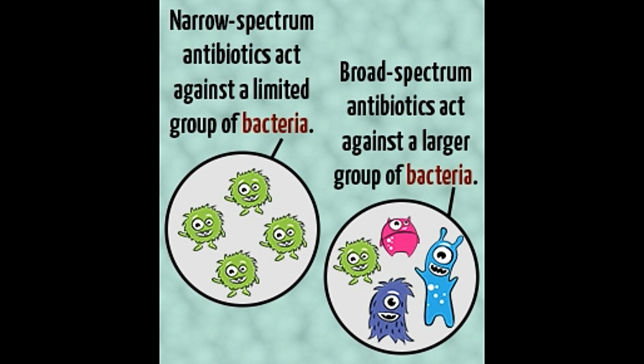Broad Spectrum: The best example here is amoxicillin, which is effective against a wide spectrum of bacteria, including Helicobacter, Streptococcus, Moraxella, Enterococcus, Bacillus, and Hemophilus. Another example is tetracycline, which is effective against a variety of bacteria that cause skin infections such as acne, respiratory tract infections, strep infections, and even Lyme disease.